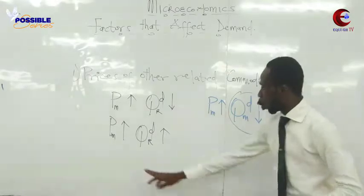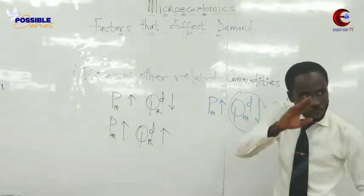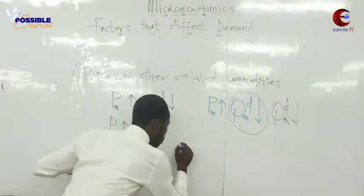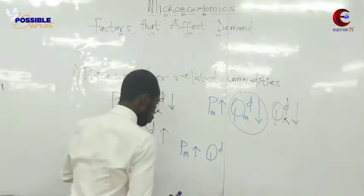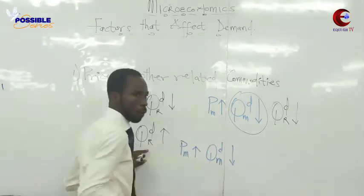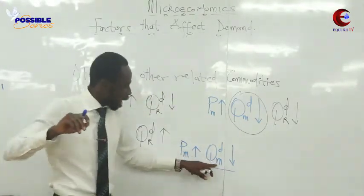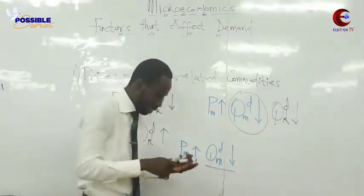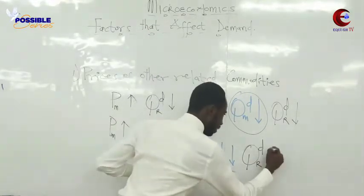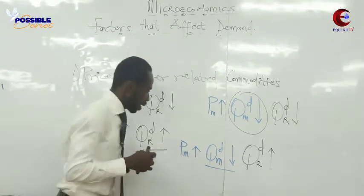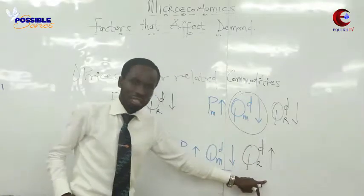Now look at this case. When the price of Milo goes up, the quantity demanded of Richoku also goes up. Behind the scene, when the price of Milo goes up, quantity demanded of Milo comes down by the law of demand. But remember, we are not referring to own price — our focus is on the quantity demanded of Richoku, which goes up. So if the quantity demanded of Milo is coming down while Richoku is going up, it means they are substitutes.